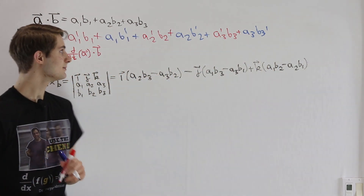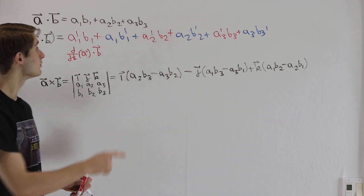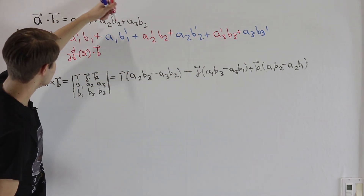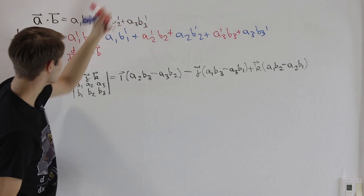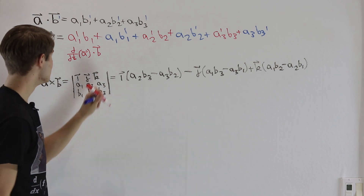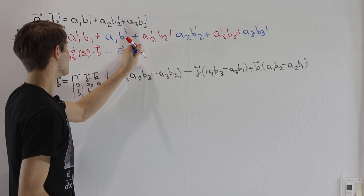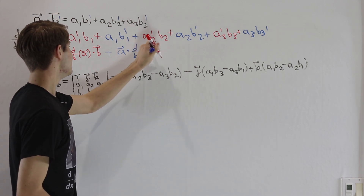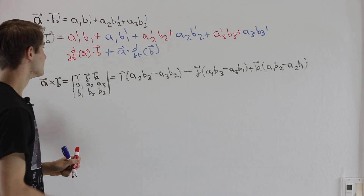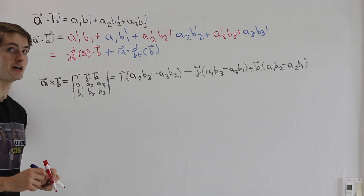When we look at the blue terms, notice the pattern is exactly the opposite. Instead of having all of the A terms differentiated, we have all of the B terms differentiated: A1 B1', A2 B2', A3 B3'. And that's the same thing as doing A dotted with B', or in other words, A dotted with the derivative with respect to t of our B vector. So this is the formula for the derivative of a dot product.